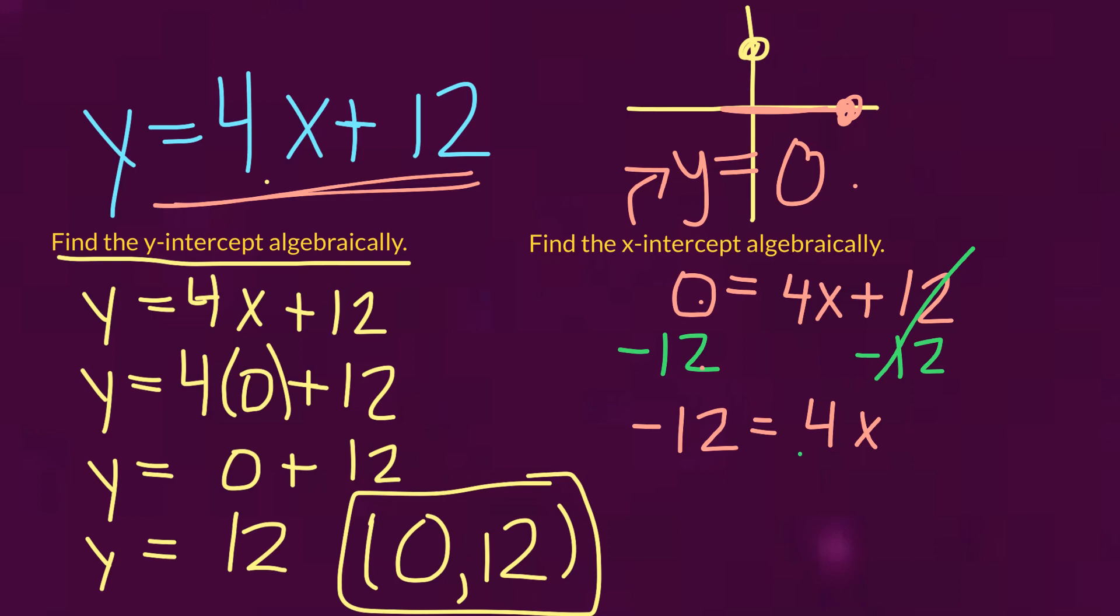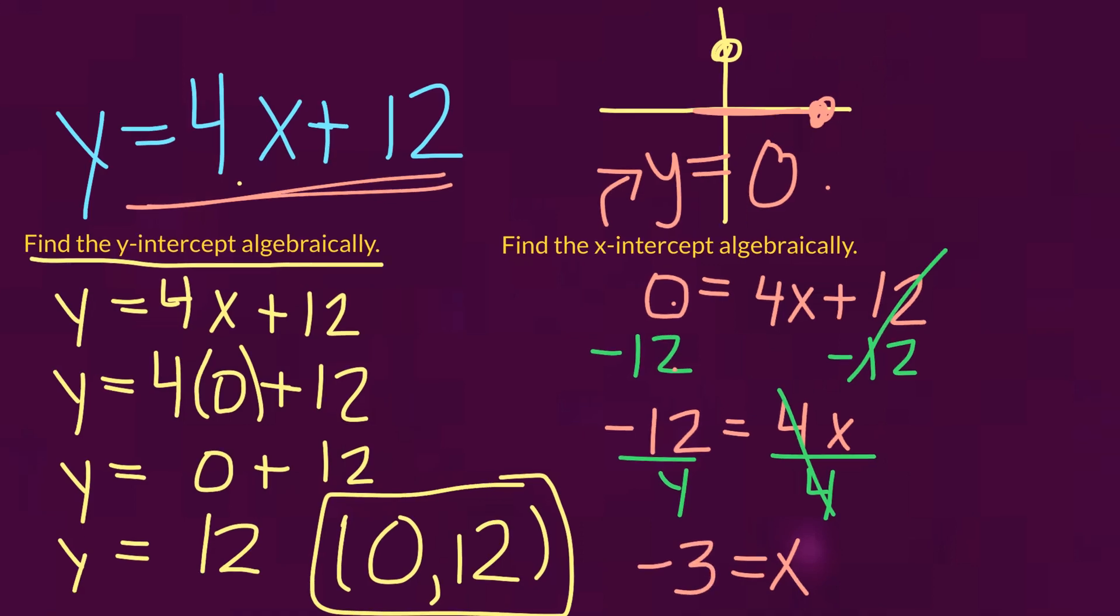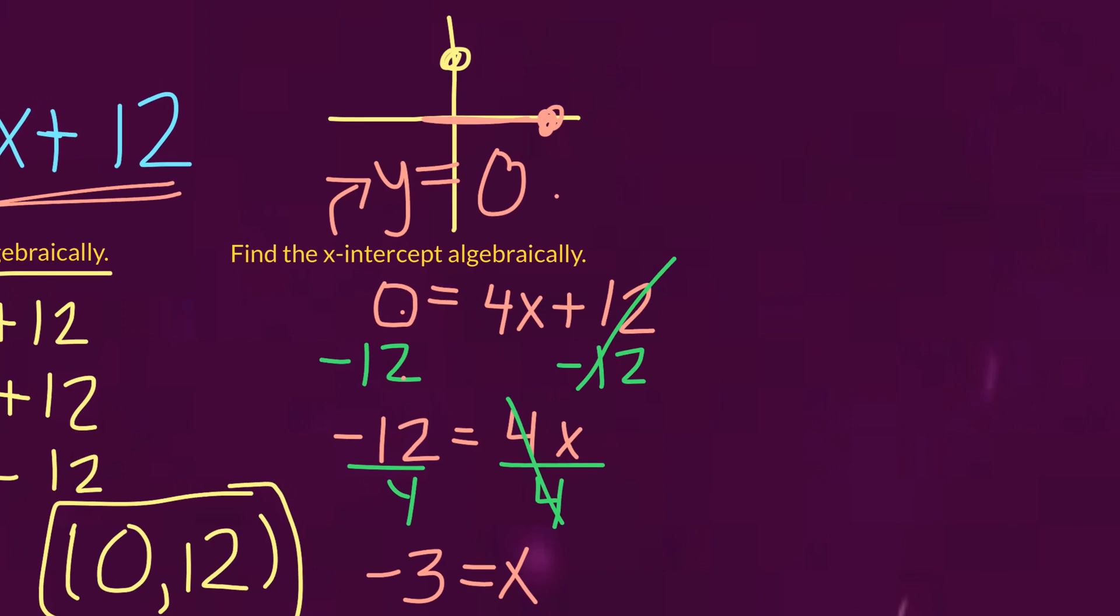Last step here to get x by itself is to divide both sides by 4. And then we would get our answer of x equals negative 12 divided by 4. That's negative 3. Last step is to write this as an ordered pair. We figured out our x value is negative 3. And we know because it's an x-intercept, we get a y value of 0. So that would be our final answer.